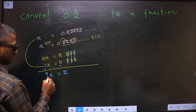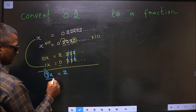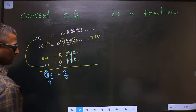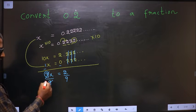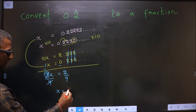So now, to get x, I should remove this 9. So, to remove 9, I divide by 9 on both sides. So, this cancels out: x equal to 2 by 9.